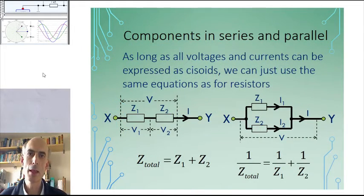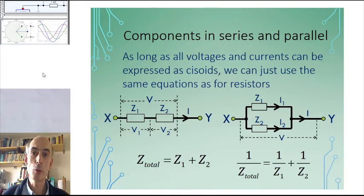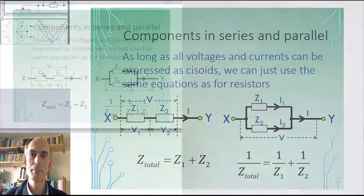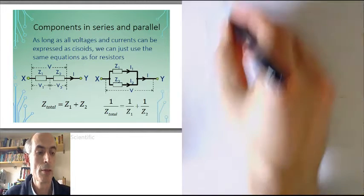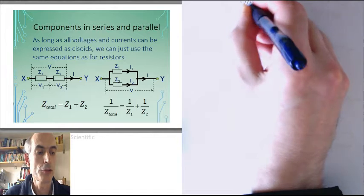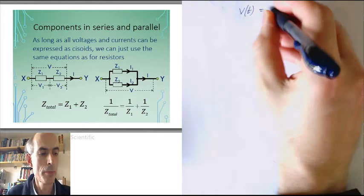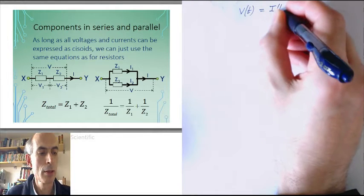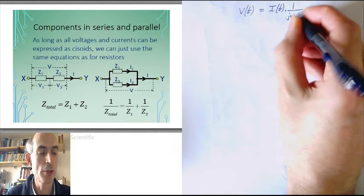As I mentioned before, if you make this assumption that all of your voltages and currents everywhere in the circuit can be represented as sinusoids, then you can produce equivalences to Ohm's law for resistors and capacitors. Specifically for a capacitor, we can say that the voltage across a capacitor is equal to the current through the capacitor times the complex impedance of a capacitor, which is 1 over jωC.